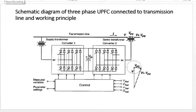Here we can see the schematic diagram of three-phase UPFC connected to transmission line. We will discuss the working principle as well. As shown in the figure, UPFC consists of two voltage source converters operated from a DC link provided by a DC storage capacitor. This arrangement operates as an ideal AC to AC converter in